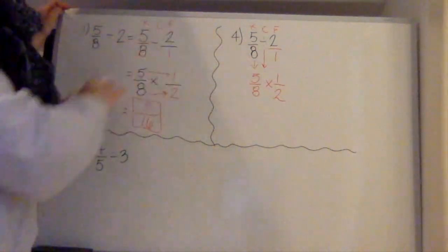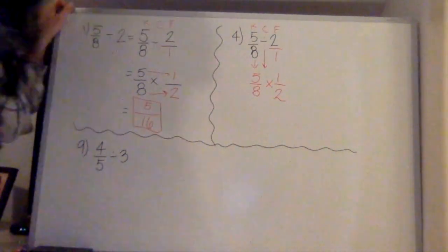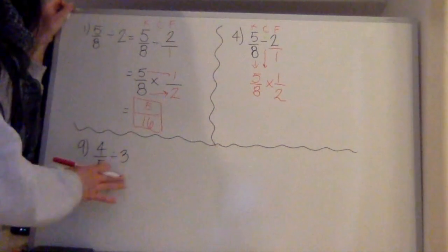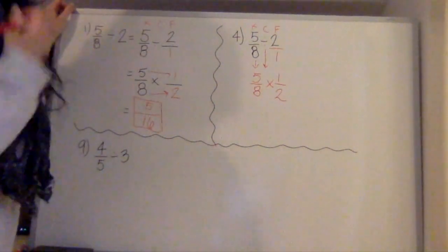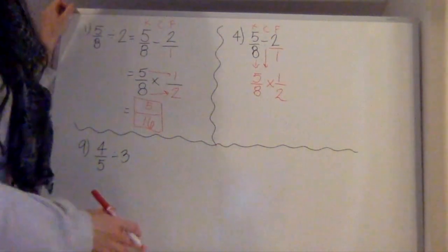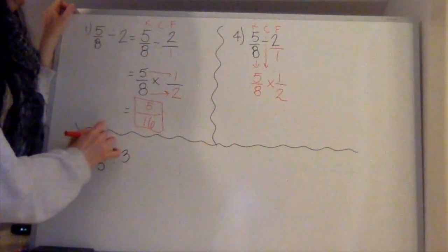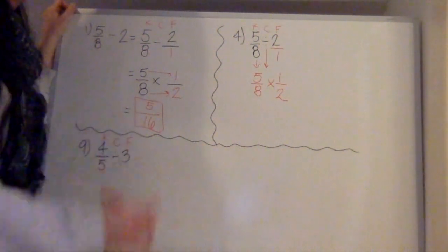So from there, you could do 5 through 8 by yourself, and we'll skip over to number 9, and this question is asking us to fully divide. So again, nothing crazy here, guys. We're just using keep, change, flip.